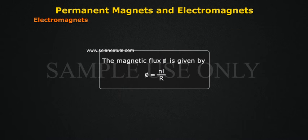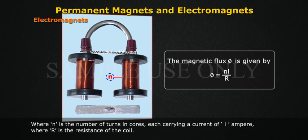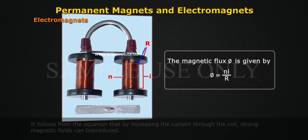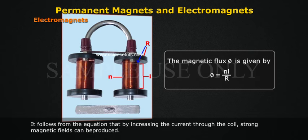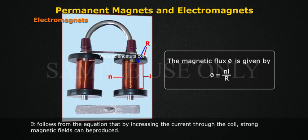The magnetic flux phi is given by phi equals ni by r, where n is the number of turns in the coil, each carrying a current of i amperes, where r is the resistance of the coil. It follows from the equation that by increasing the current through the coil, strong magnetic fields can be produced.